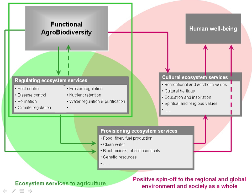Biodiversity on the scale of agricultural fields or landscapes provides ecosystem services that support sustainable agricultural production and can also have a positive spin-off to the regional and global environment and society as a whole.